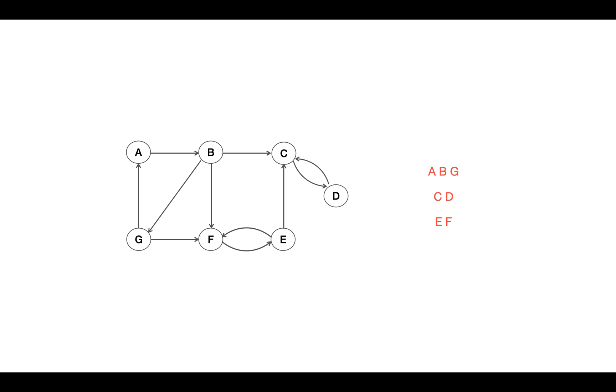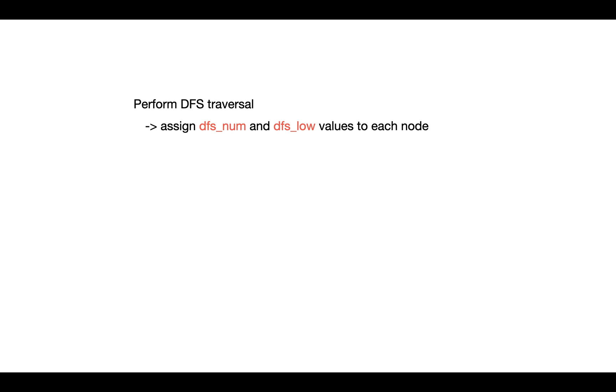This is how Tarjan's algorithm works and helps us to find the strongly connected components in any graph. What we do - we do DFS traversal over the nodes with maintaining two arrays: DFS_num and DFS_low, for keeping track of the node from which the strongly connected component is getting started. So we use stack and push nodes into it when any node get explored for the first time.